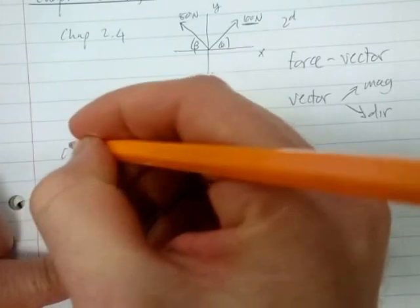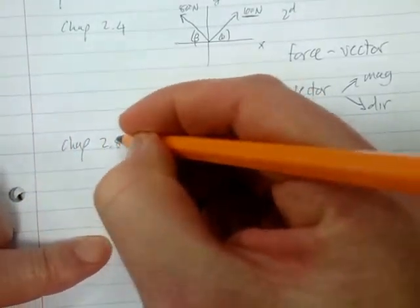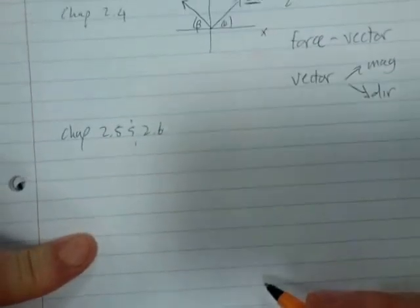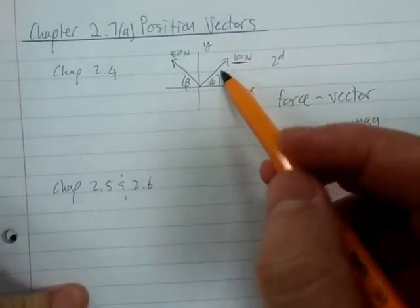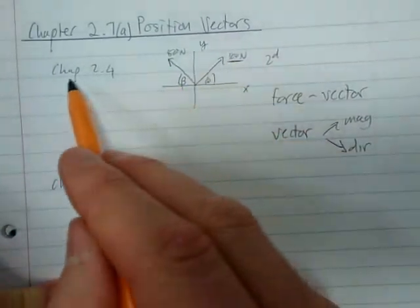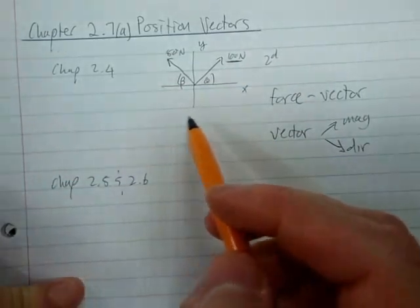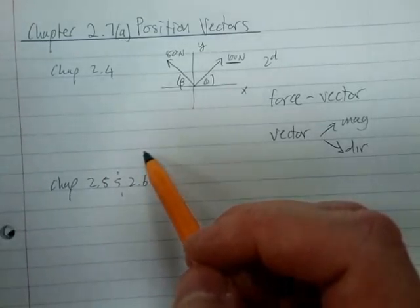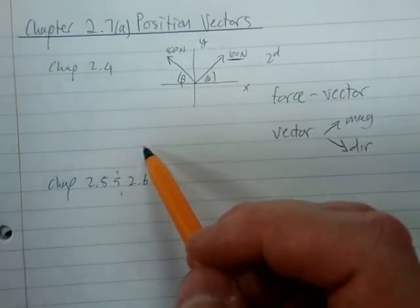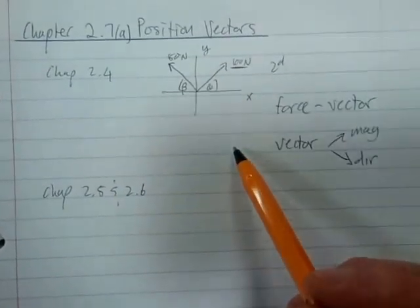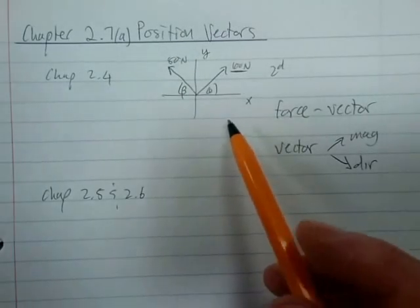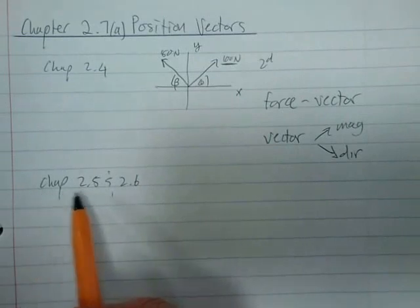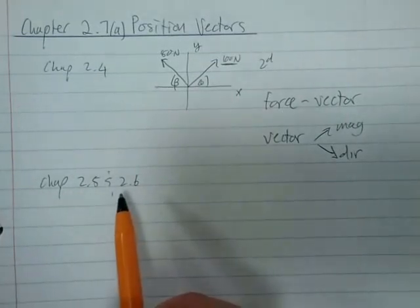Then in Chapter 2.5 and 2.6, we moved out of 2D. In Chapter 2.4 we were introduced to Cartesian vector notation, and Cartesian vector notation helps us mainly when we're in three-dimensional space. So in Chapter 2.5 and 2.6 we are now working in three-dimensional space.